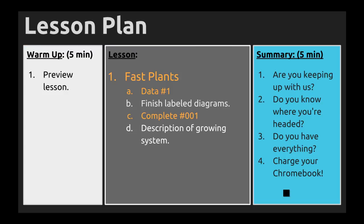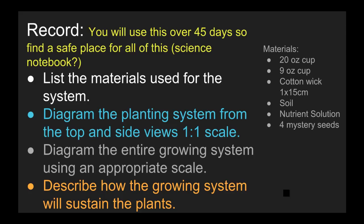Agenda-wise, we'll take data really quick — it's pretty short, we'll go over it on the next screen. You need to finish labeling those diagrams you've been working on for the last day or so. Then move on to your first second-semester task in Classroom, number 001. Notice I'm using a three-digit numbering system for second semester as opposed to a two-digit numbering system in the first. And then we'll want you to be able to describe your growing system, which we'll probably carry over until Monday.